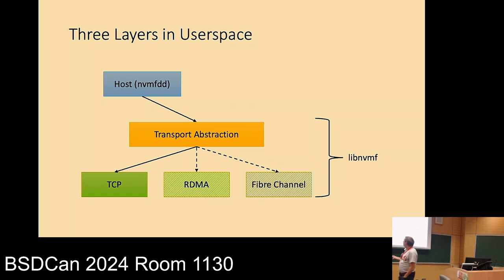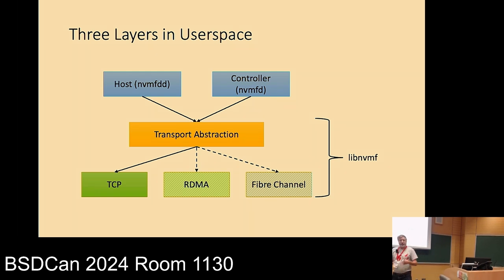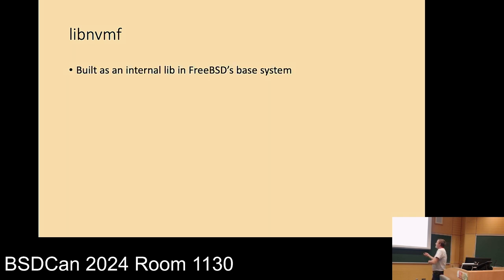For the upper layers, I've written two things: a simple host tool called nvmfdd — more of a demonstrator good for early testing — and a userspace controller daemon that can export local files or disk devices as namespaces to a remote host. The library is available in the base system as an internal library, mostly intended for use by things in the base system.